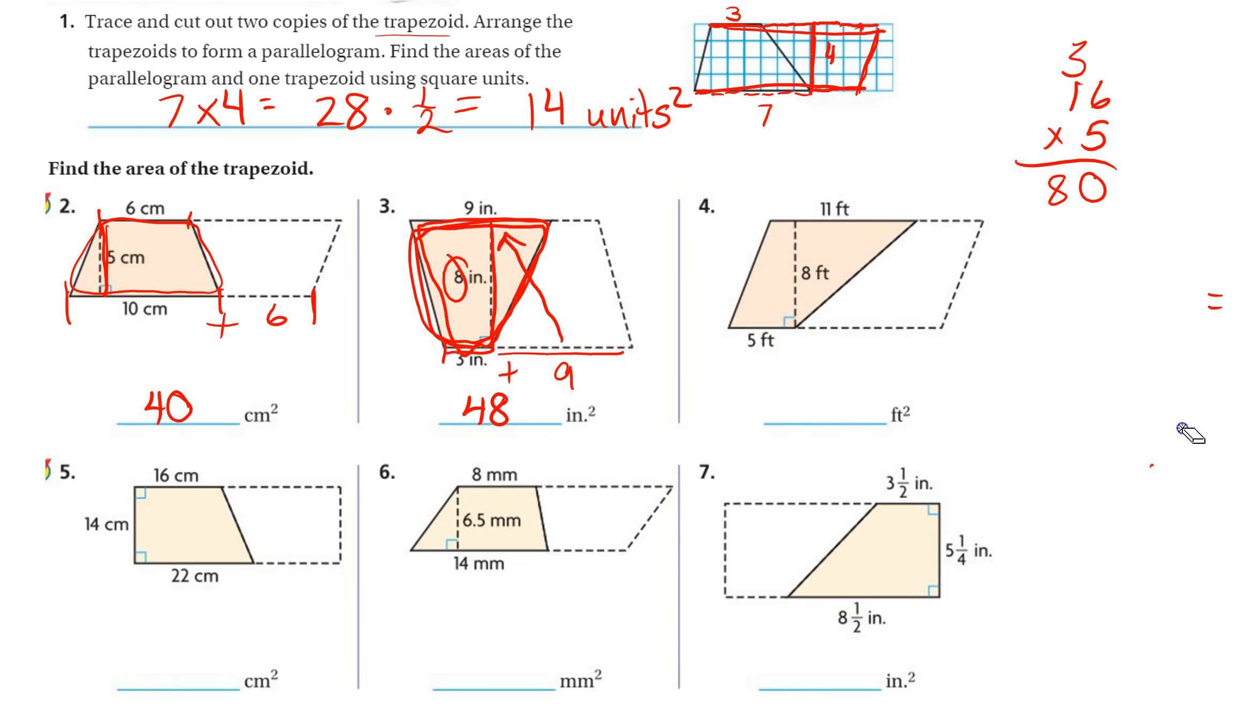Again, you don't need to erase your work, just get more scratch paper. Here, from here to here, they told us is 5. The height is 8, and then from here to here would be this length, 11. So 11 plus 5 is 16, and then our height was 8.